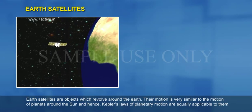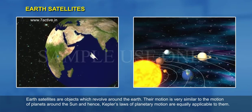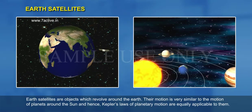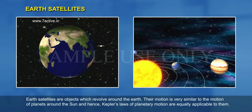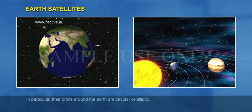Earth satellites are objects which revolve around the Earth. Their motion is very similar to the motion of planets around the Sun, and hence Kepler's laws of planetary motion are equally applicable to them.